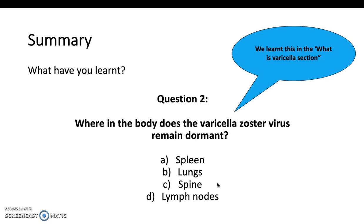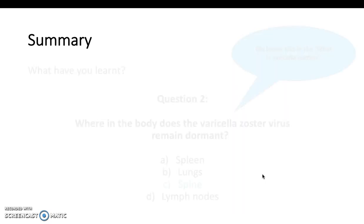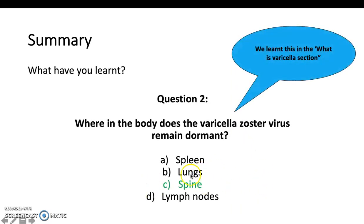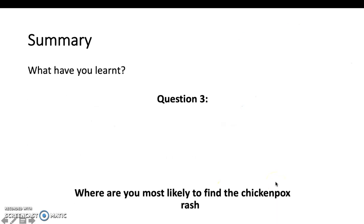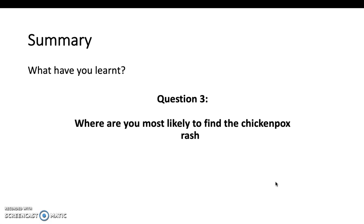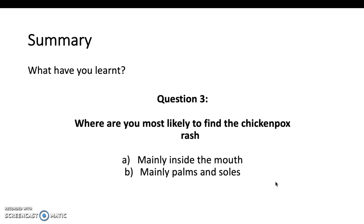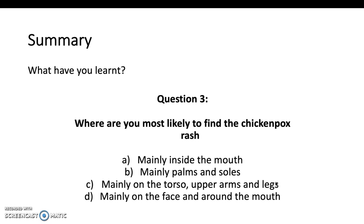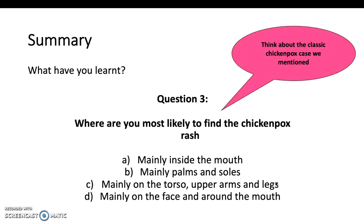It's the spine — it remains dormant in the sensory nerve roots, which are located in the spine. If reactivated, this causes shingles, which is more commonly presented in adulthood. Final question: where are you most likely to find the chickenpox rash? Inside the mouth, palms and soles, torso and upper arms and legs, or face and around the mouth?